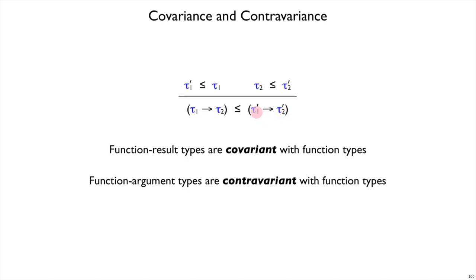The argument position of a function type, that is a contravariant position, because when we're comparing the two arrow types as a subtype and we look at the argument types to compare to each other, they get flipped around. They're contra. So tau1 prime here is on the left, whereas when it's part of the arrow, it is on the right of the subtype relation.